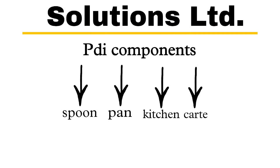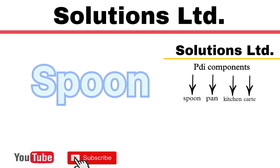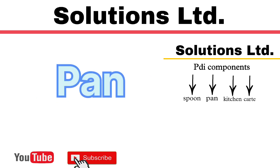These are the PDI components. First one is Spoon — Spoon is the graphical design interface where we can build ETL transformations and jobs. This is the main tool where we are going to spend most of our time. We can edit, run, and debug anything in Spoon.